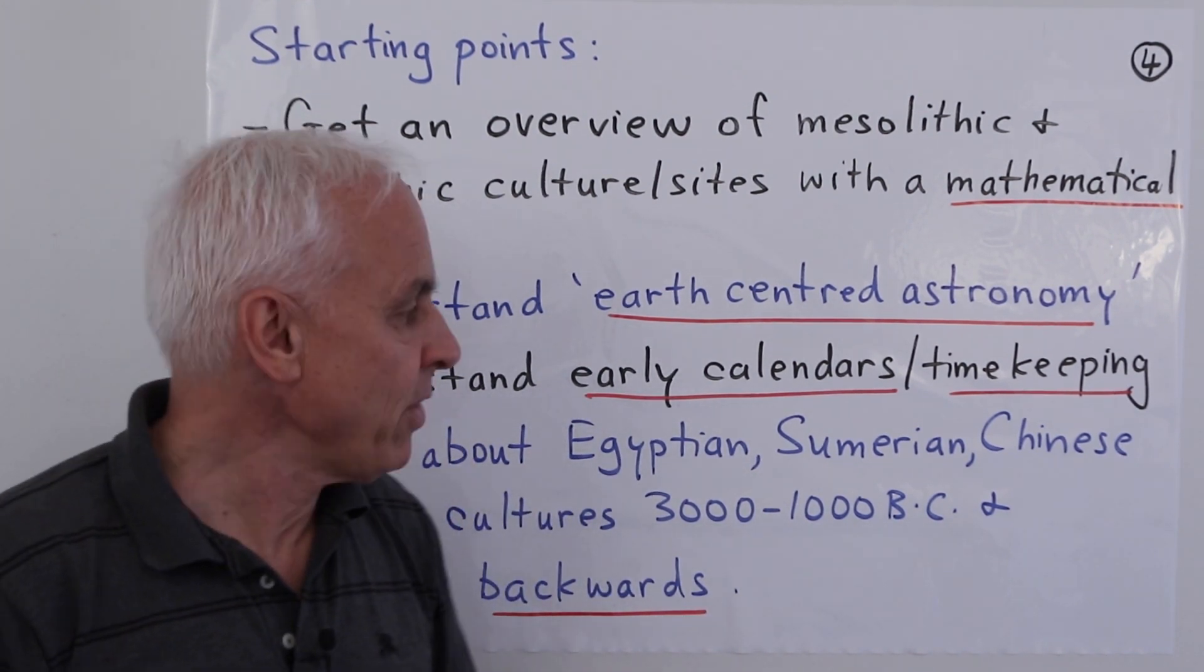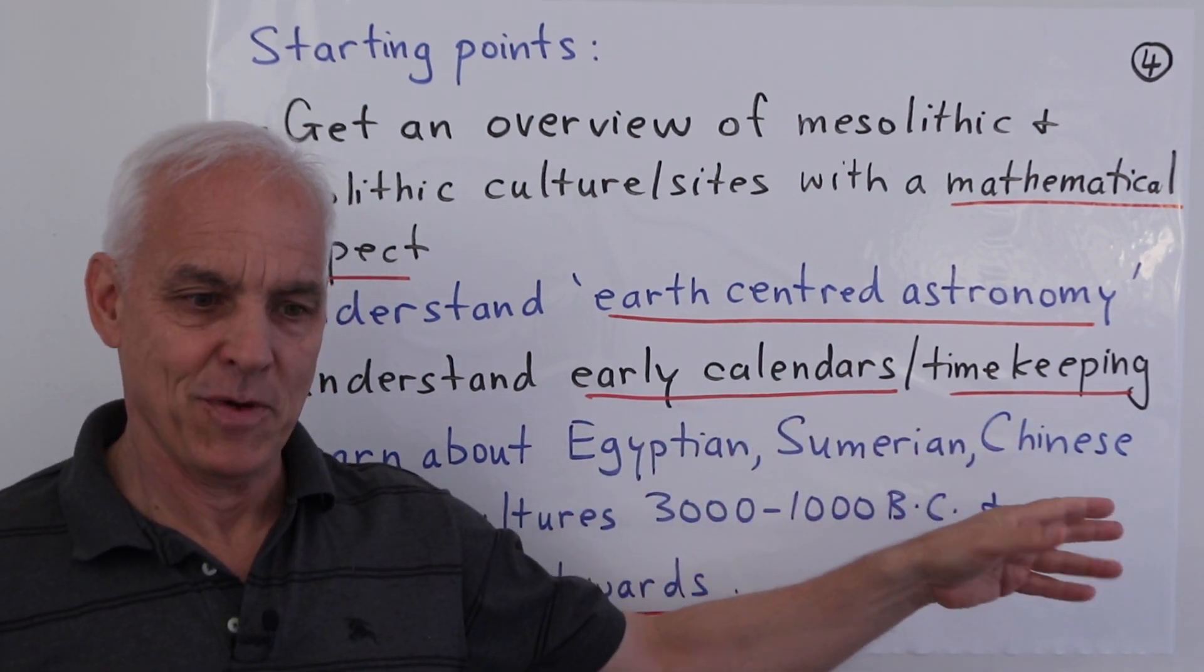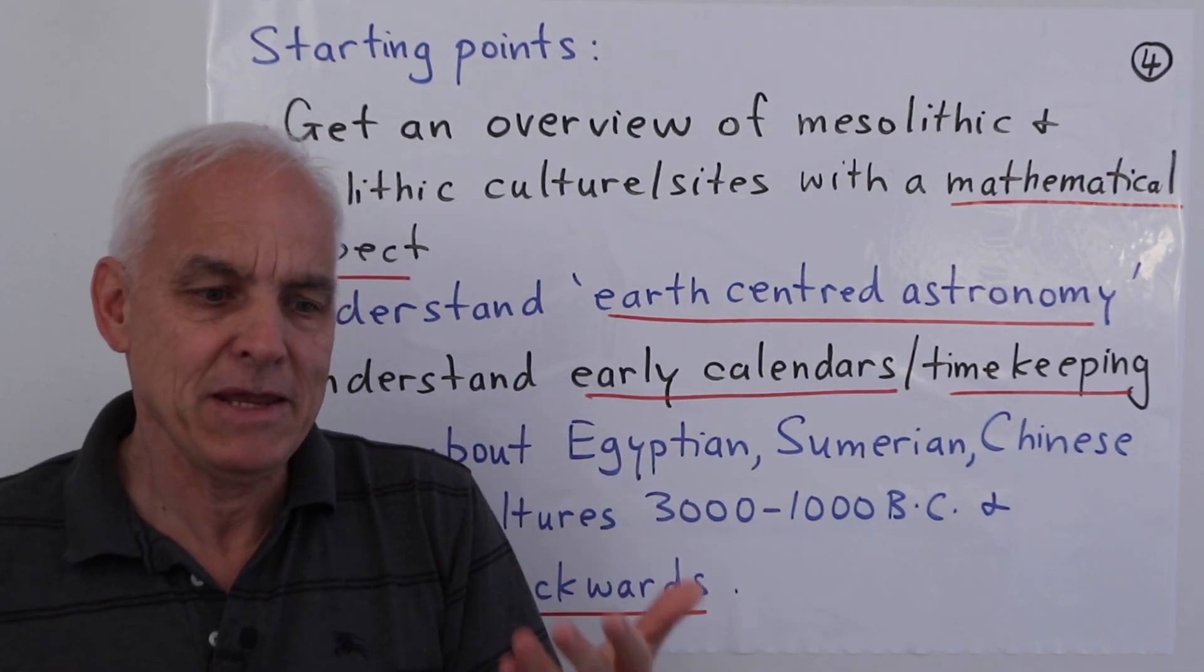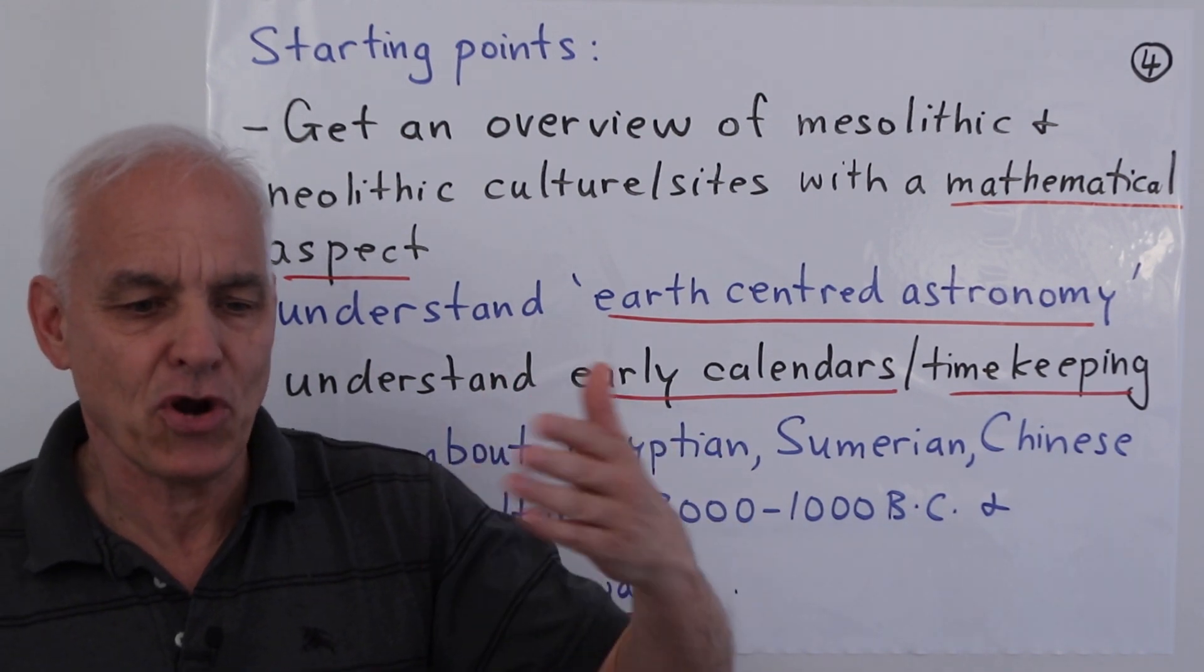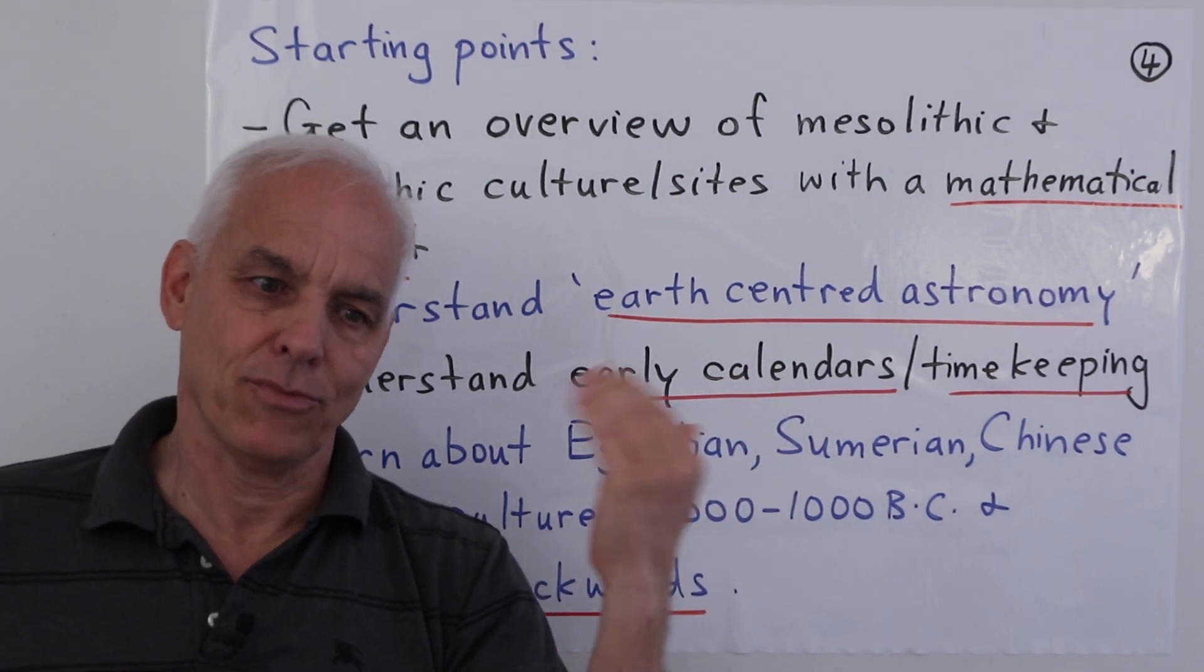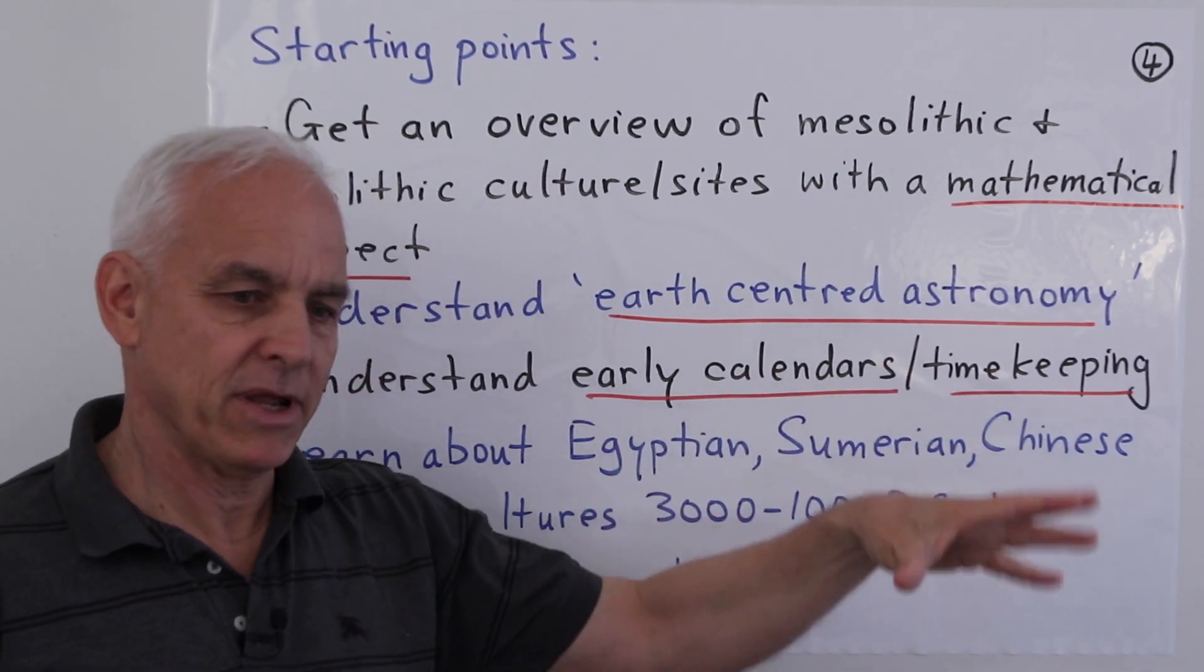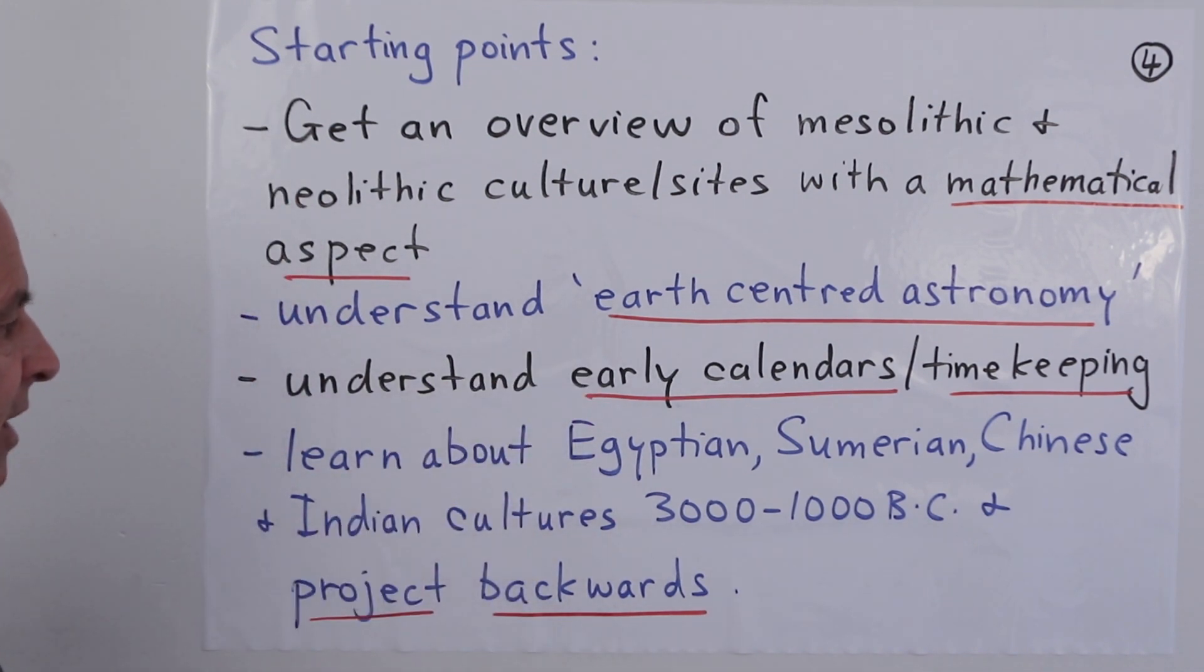Closely connected with that, we want to understand early calendars and timekeeping. The discreteness of a day is a fundamental unit - perhaps one of the fundamental units of something that's recurring that we can count and that we have some interest in when it comes back to the same period in the next year. This is an important thing. It probably connects with religious aspects too and certainly has a mathematical aspect.